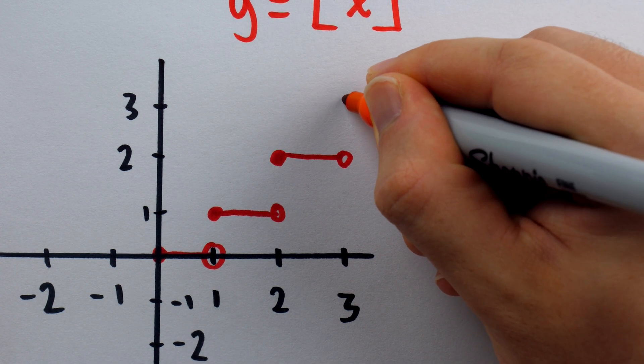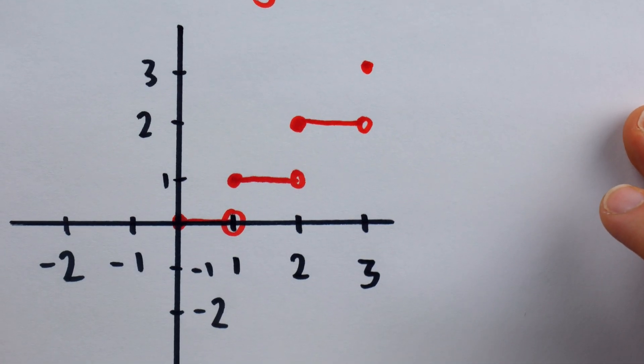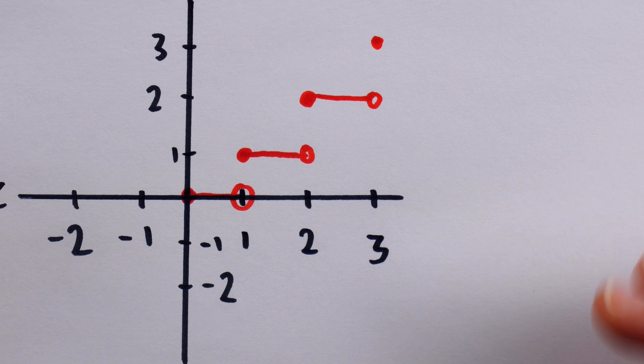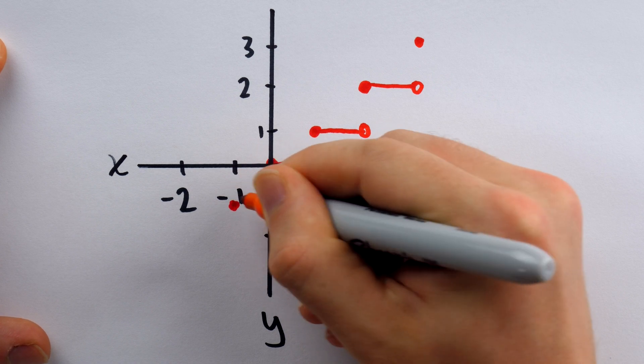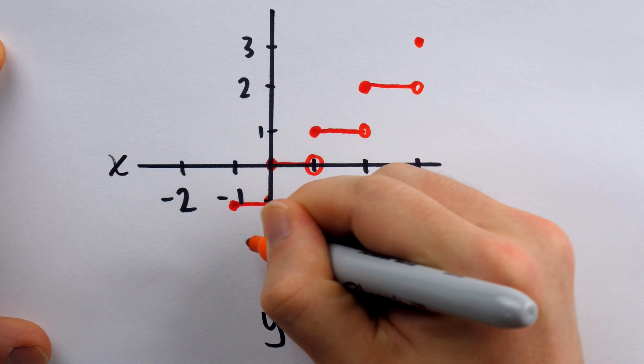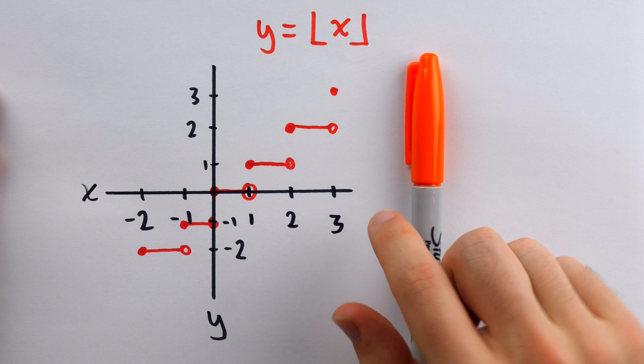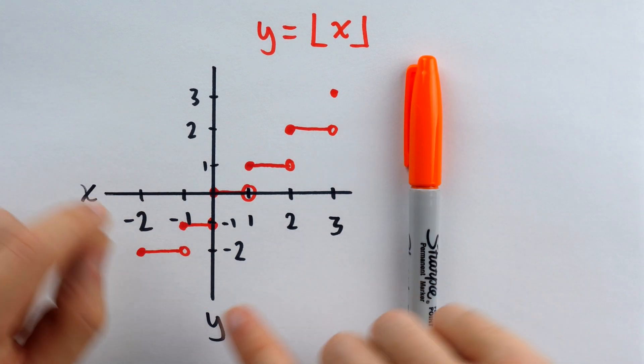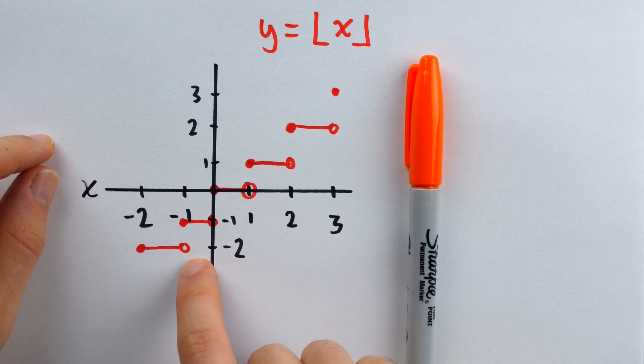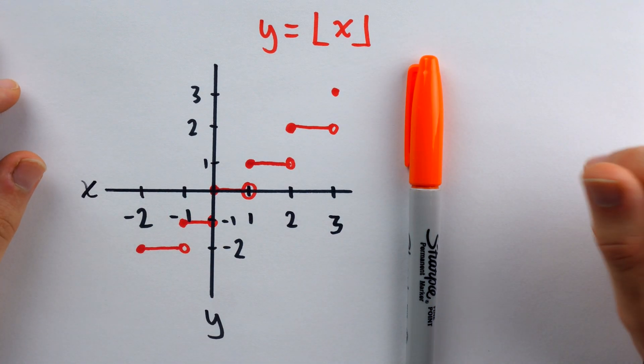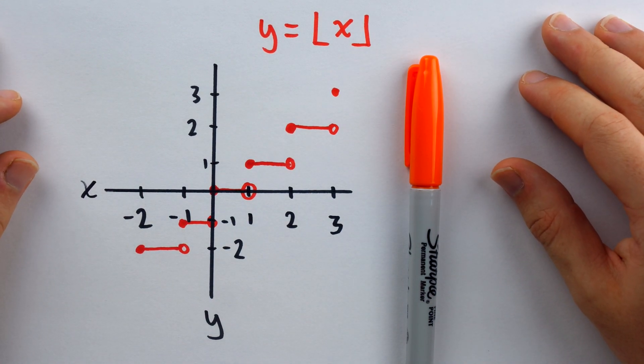And this is the pattern that the greatest integer function follows. It's just a bunch of horizontal lines, but at every integer value, it has a jump. In the jargon of calculus, these are called jump discontinuities. You can see that it definitely has a peculiar look to it, especially in comparison to your typical polynomial functions.